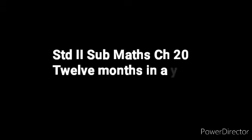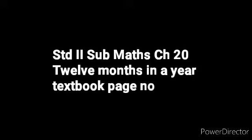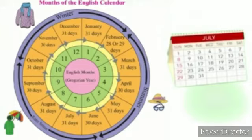Hello students, welcome back in Maths class. Today we are going to learn Chapter 20: 12 months in a year. Textbook page number 33. Children, open textbook page number 33. You know the 12 months of an English calendar — it starts from the month of January to December. Now let us start to learn the months of the English calendar.